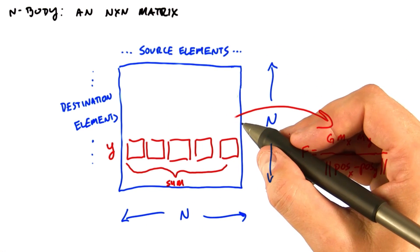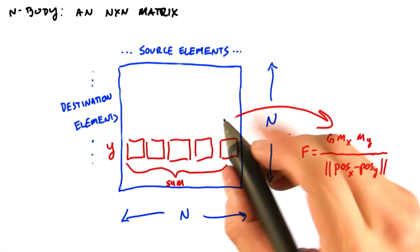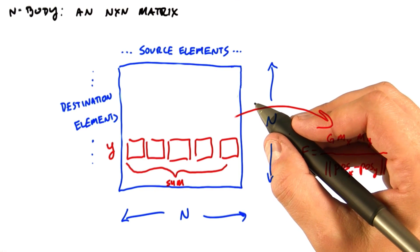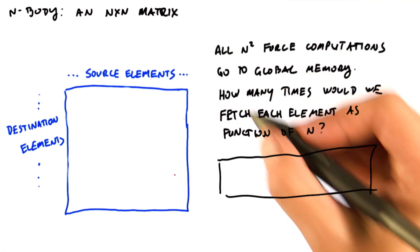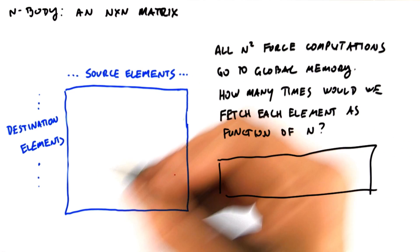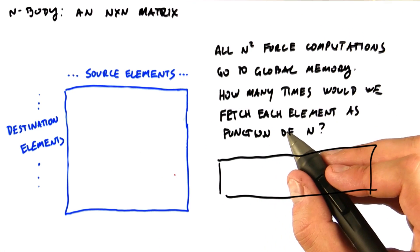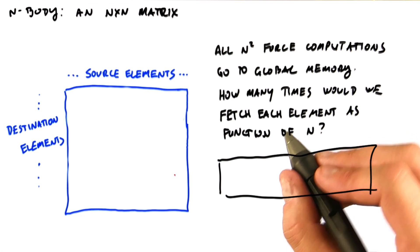In this case, the computation would be very straightforward. But we'll now see that if we run it in this way, we would be making poor use of our memory bandwidth. So if we assume that all of our n-squared force computations running in parallel must go to global memory, how many times must we fetch each element as a function of n?